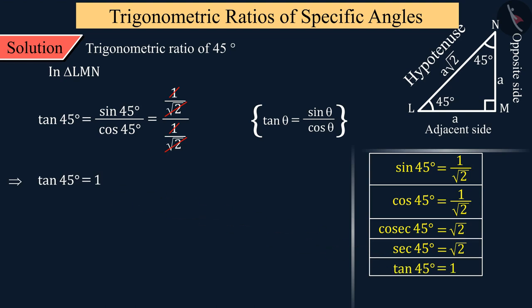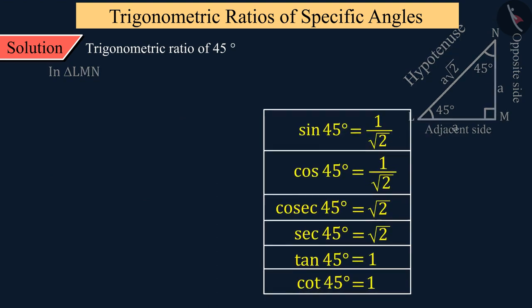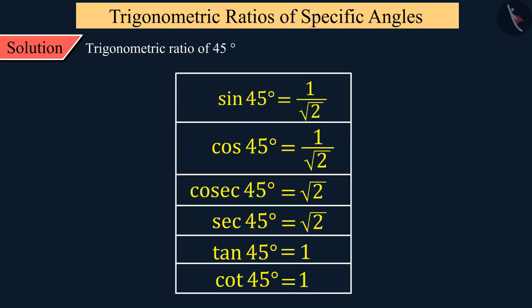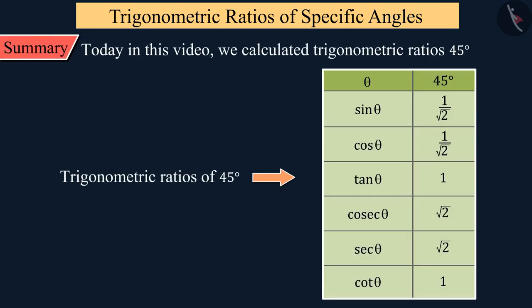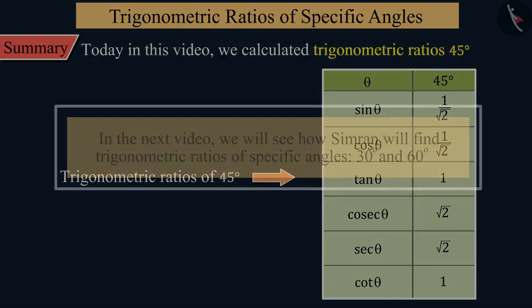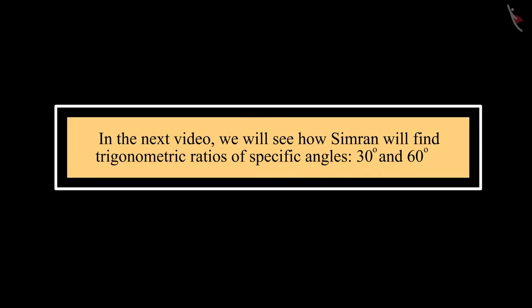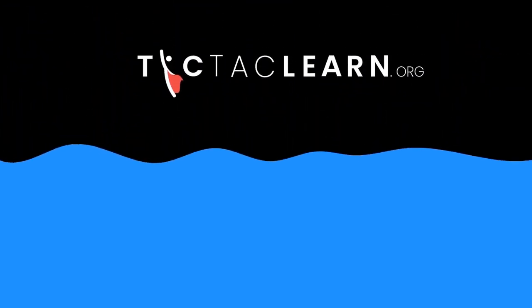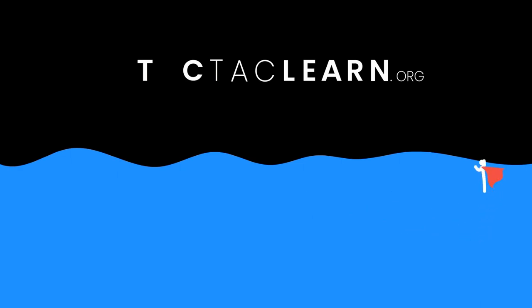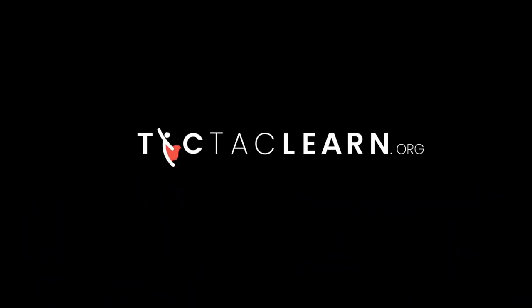Therefore, the inverse value — cot 45 degrees — will also be 1. Let us show all trigonometric ratios of 45 degree angles in a table. Today we calculated trigonometric ratios of 45 degree angles. In the next video, we will see how Simran will find trigonometric ratios of 30 degrees and 60 degrees angles.